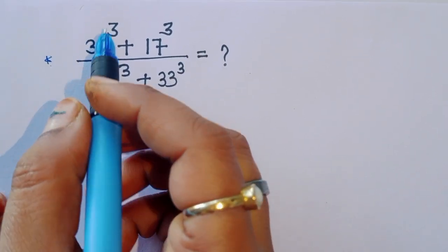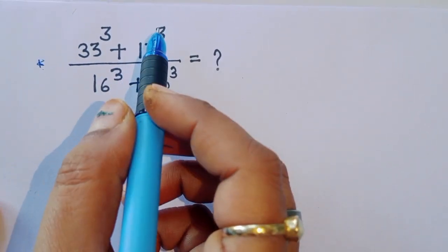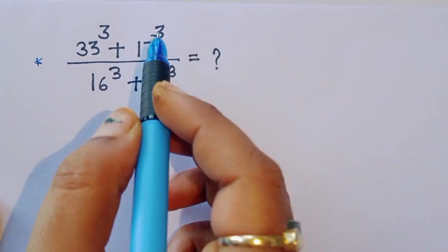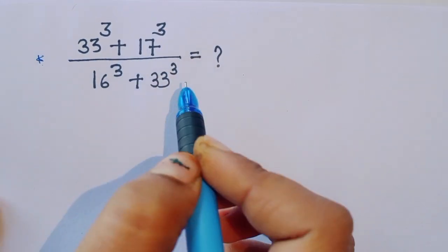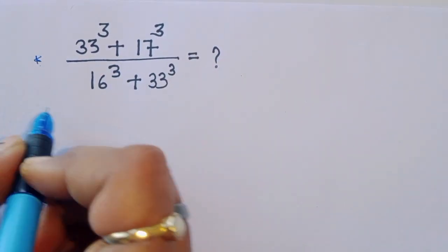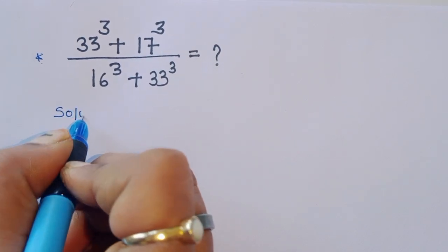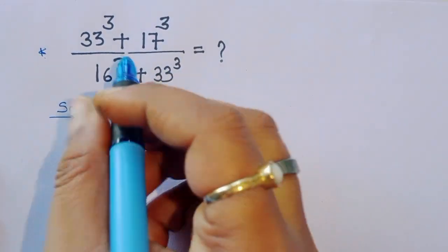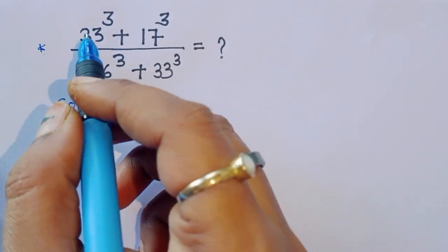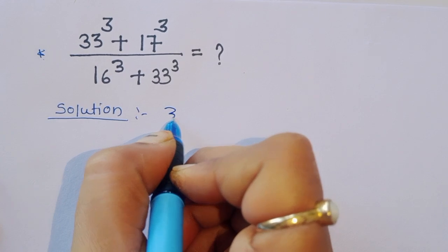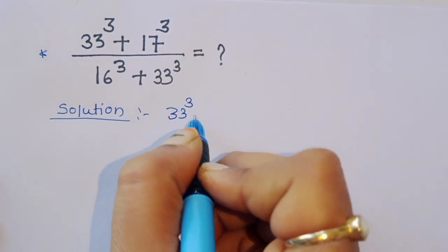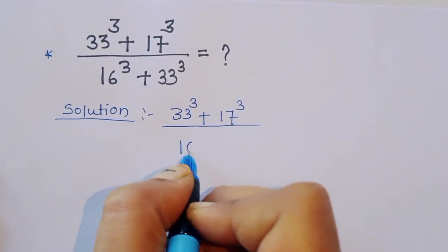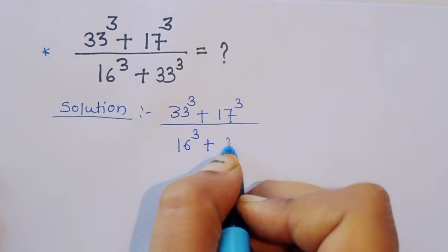The question is: 33 cube plus 17 cube divided by 16 cube plus 33 cube is equal to what? We have to find out the value of this expression. Let's see the solution. What is given: 33 cube plus 17 cube divided by 16 cube plus 33 cube.